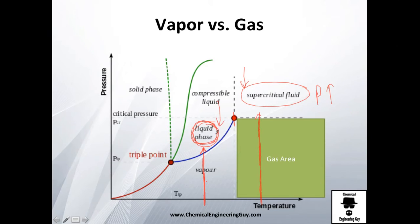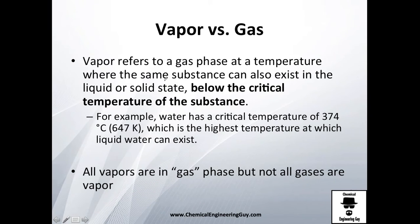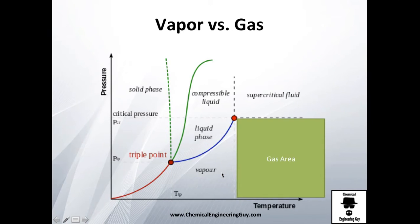Now once again, an example: water has a critical temperature of 374 Celsius, which is the highest temperature at which liquid water can exist. Also that's a good point. If I give you that critical point, you will see that if we had 375 Celsius, if I increase the pressure of that, I will form a supercritical fluid and not a liquid.